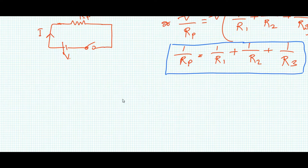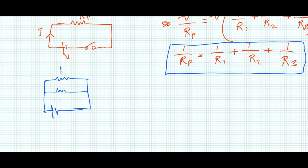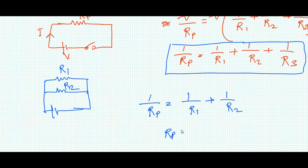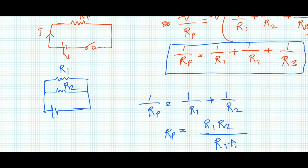If there are two resistors, then 1/Rp becomes 1/R1 + 1/R2. If we calculate this, it becomes Rp = (R1 × R2) / (R1 + R2).